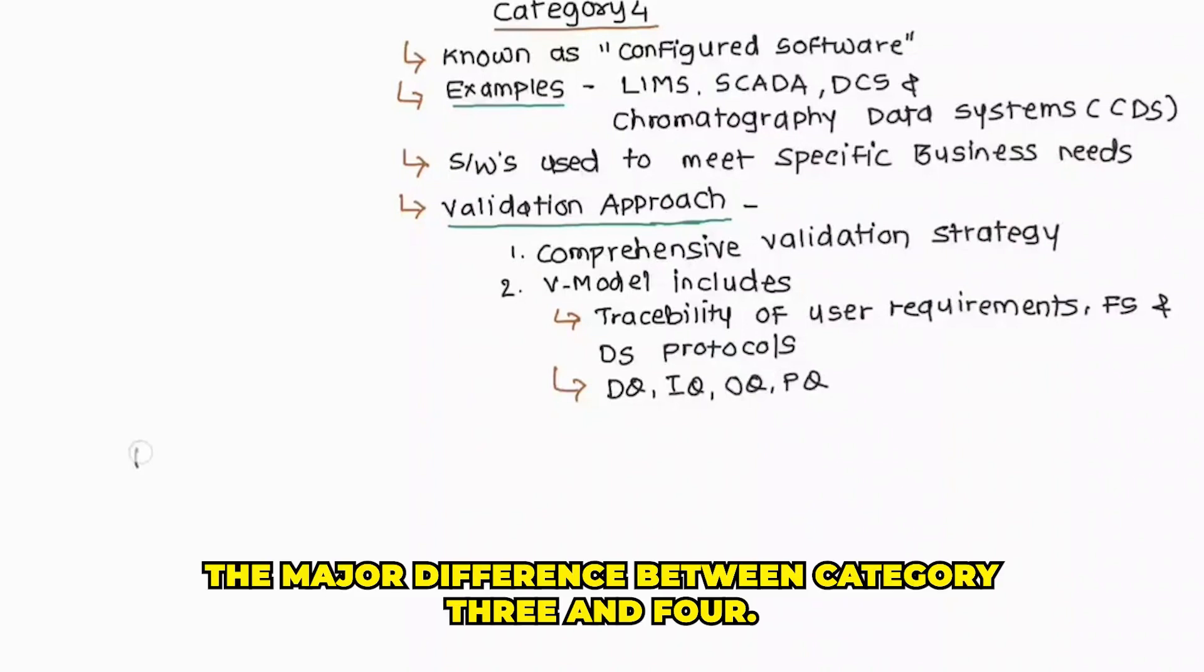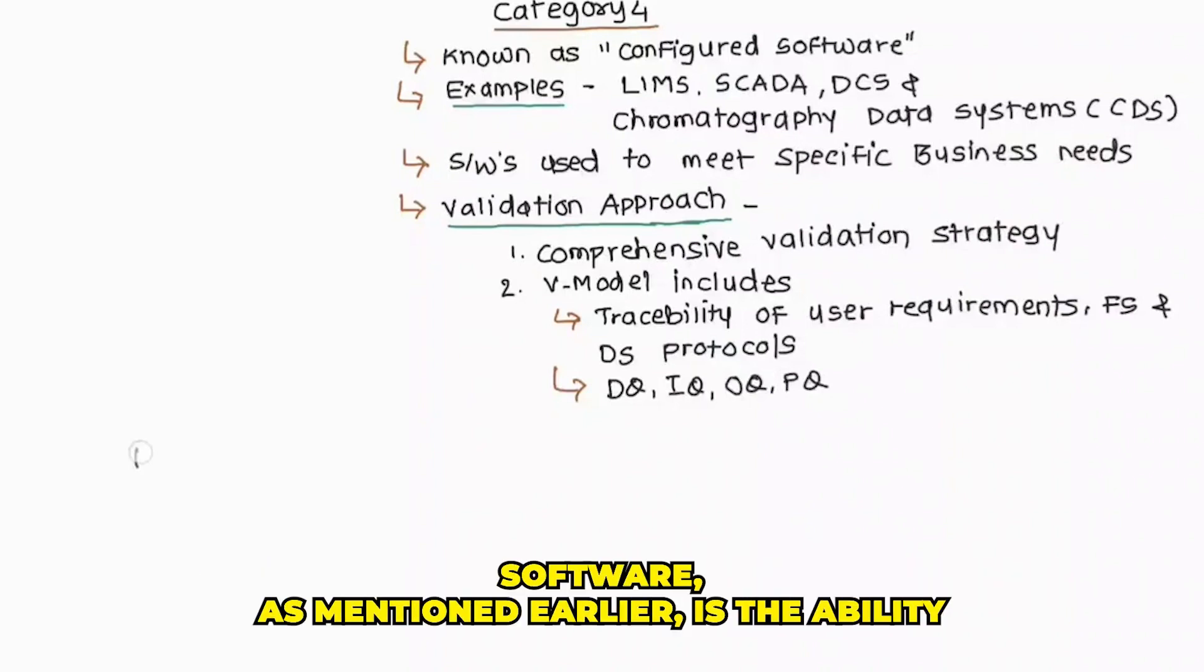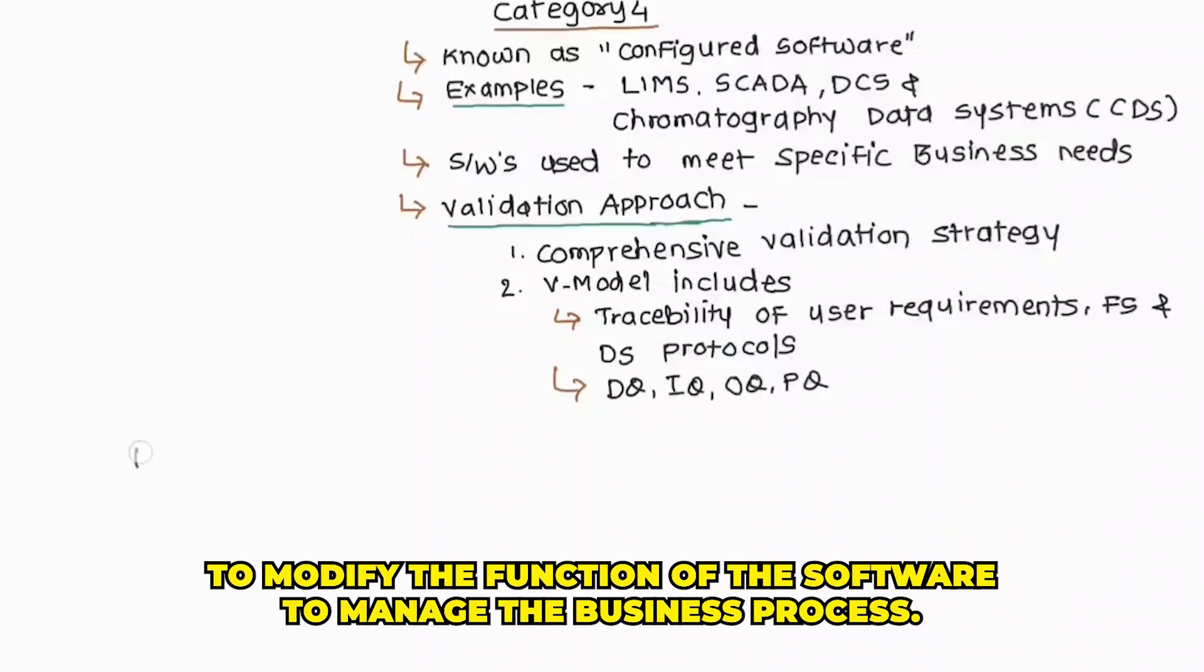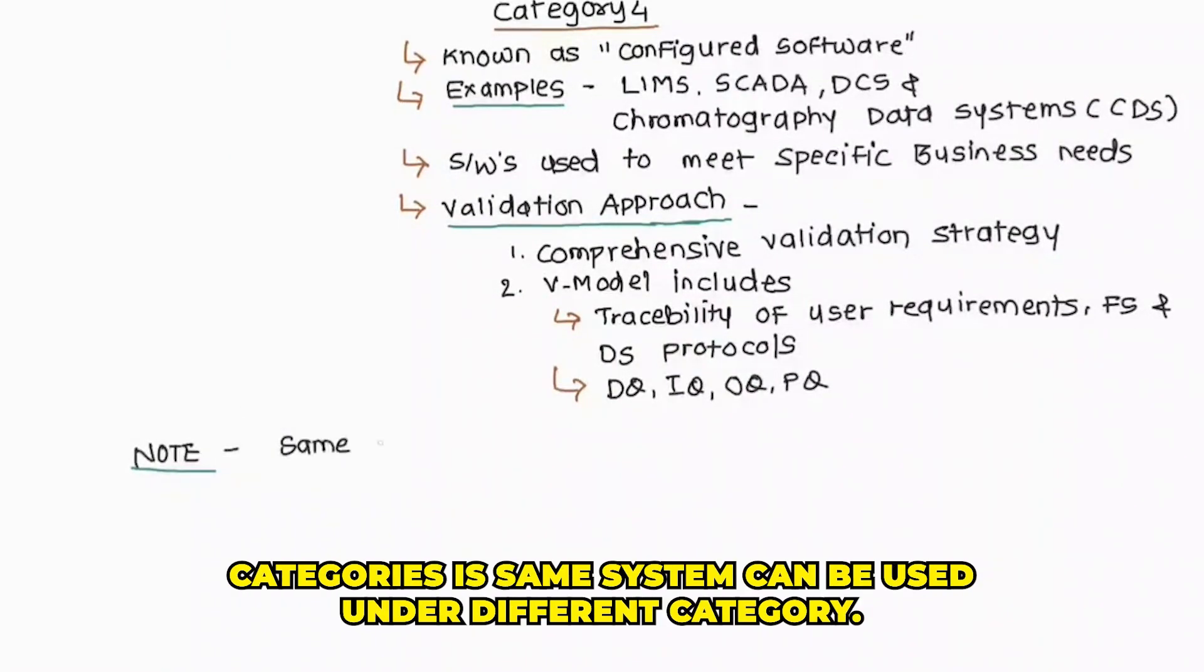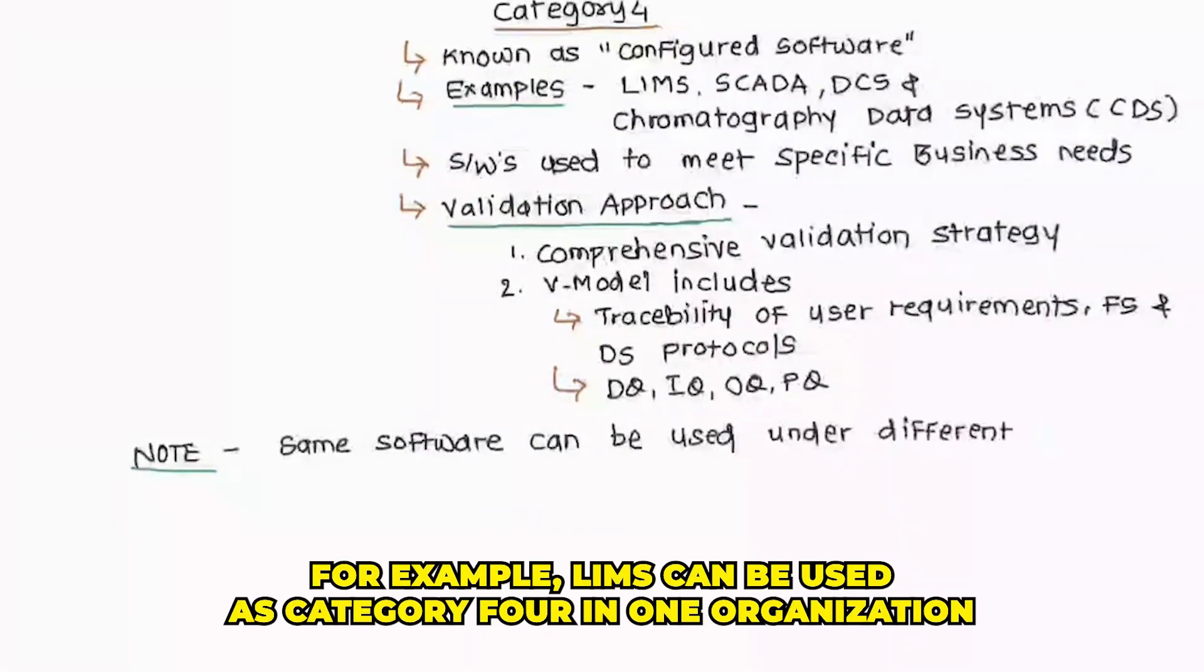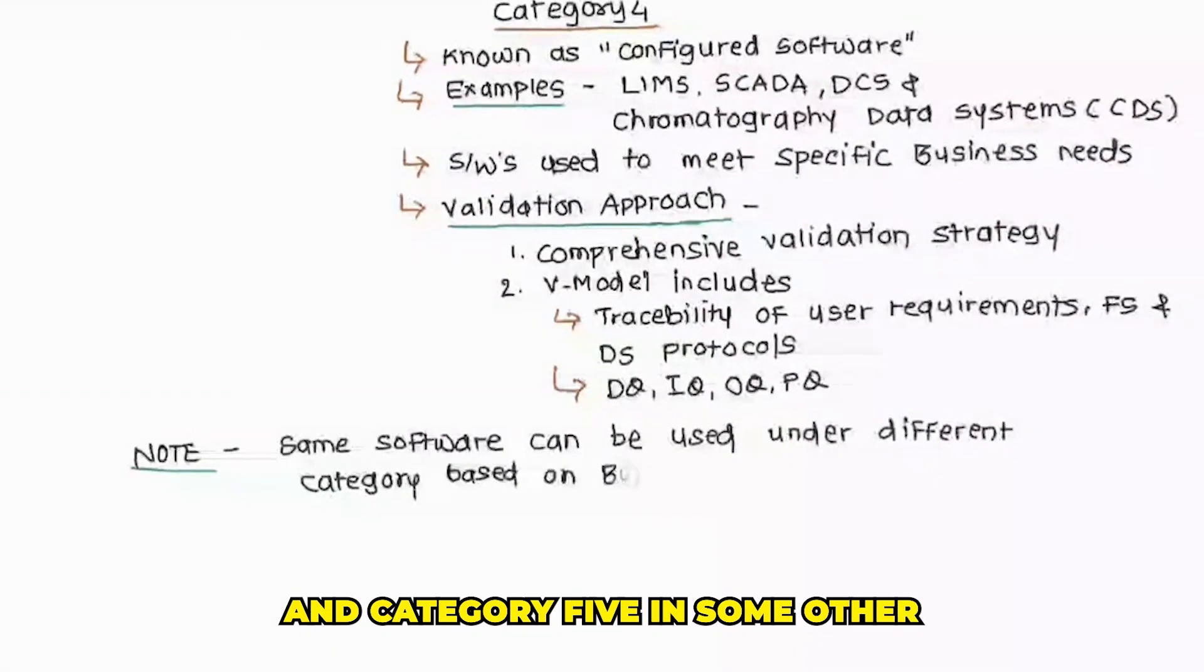The major difference between category 3 and 4 software, as mentioned earlier, is the ability to modify the function of the software to match the business process. One important thing to remember while understanding GAMP categories is same system can be used under different categories. For example, LIMS can be used as category 4 in one organization and category 5 in another.